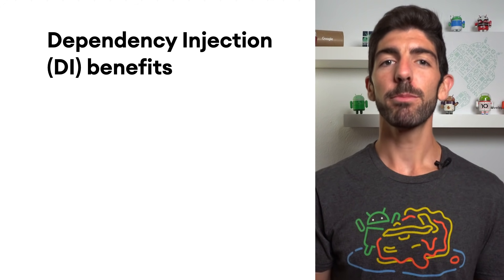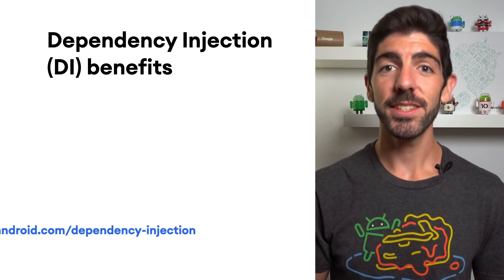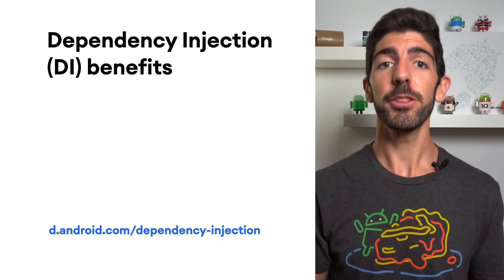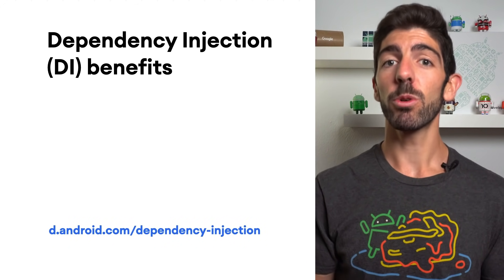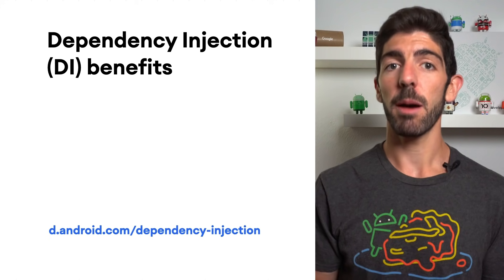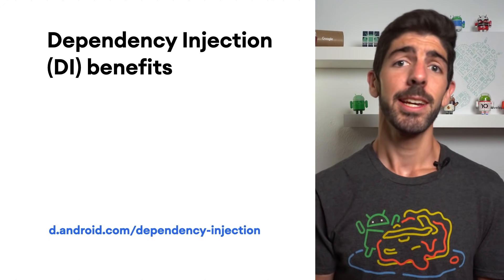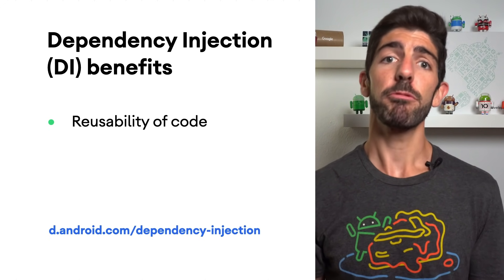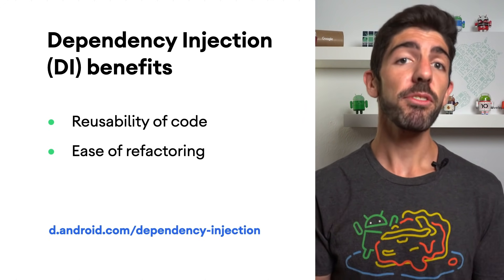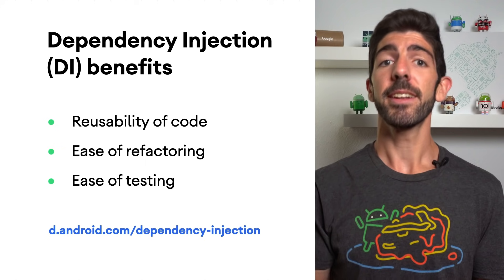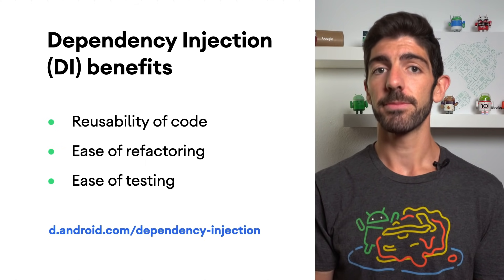By following the principles of Dependency Injection in your Android app, you lay the groundwork for a good app architecture. It helps with reusability of code, ease of refactoring, and ease of testing.